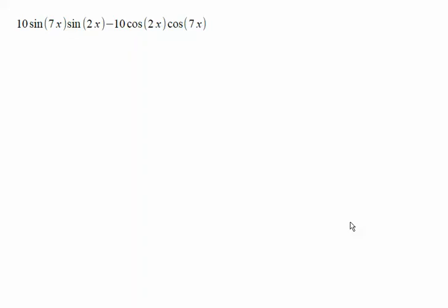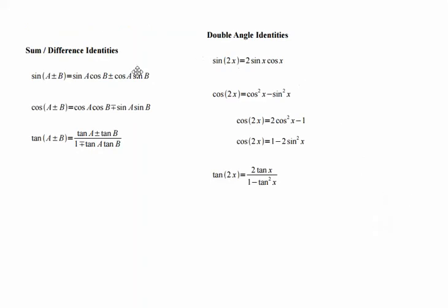Look at the expression pictured on the screen. When we're contemplating these types of things, we want to find out which of our trig identities, likely a sum and difference or a double angle identity, would be most helpful in approaching the problem we're presented.